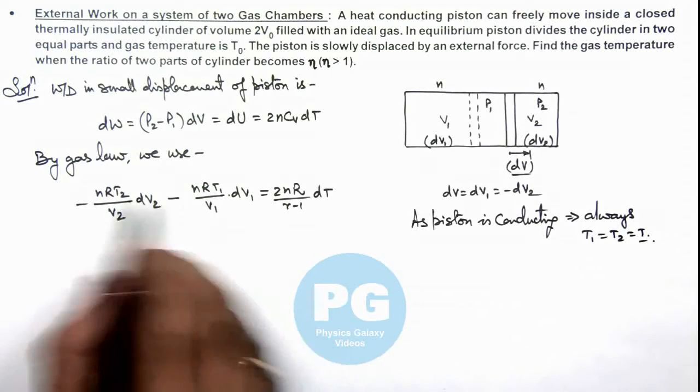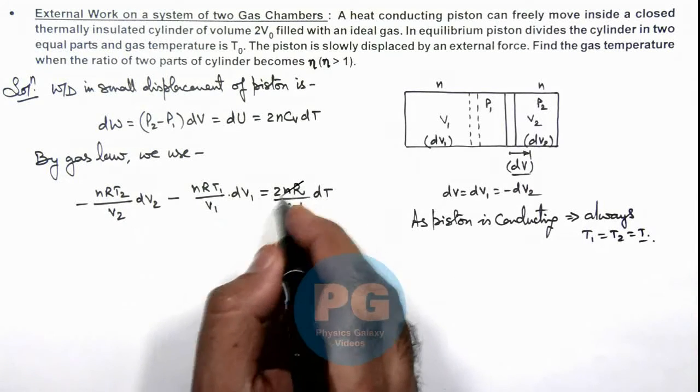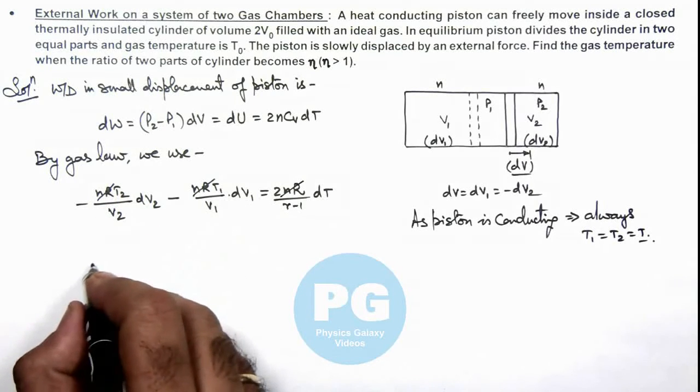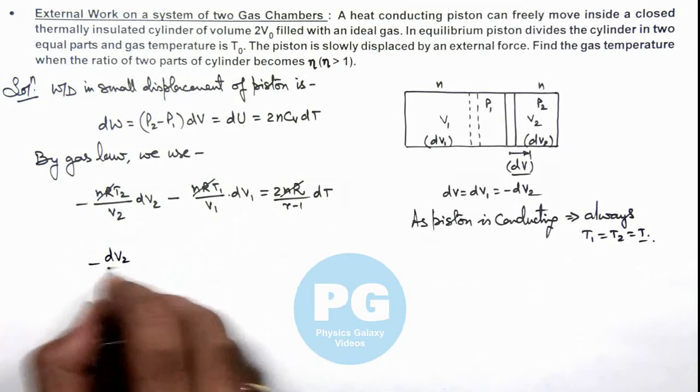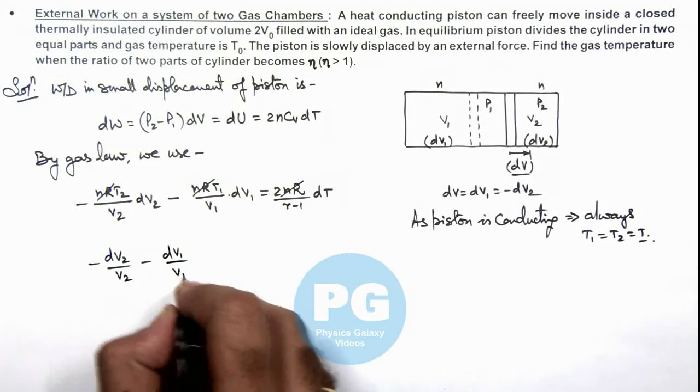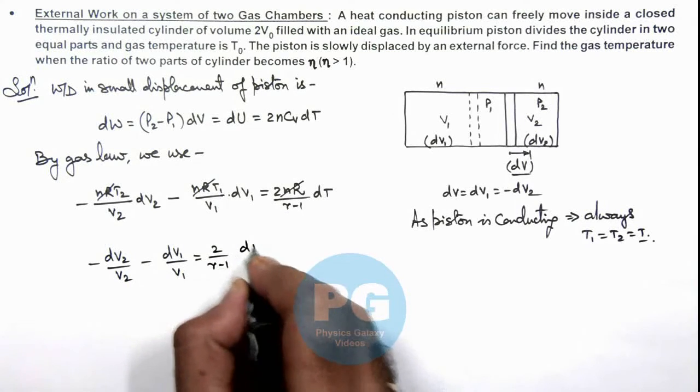So T₁, T₂ if we substitute as T, we can take it on the other side. Before that we can cancel the terms of nR. So this becomes -dV₂/V₂ minus dV₁/V₁ is equal to 2/(γ-1) dT/T.